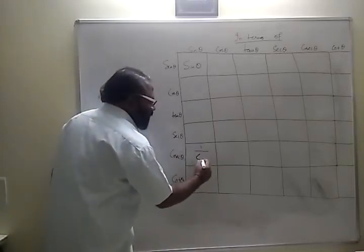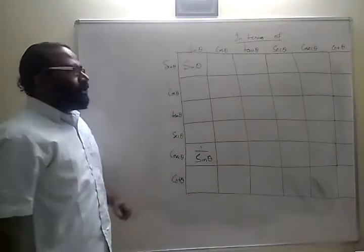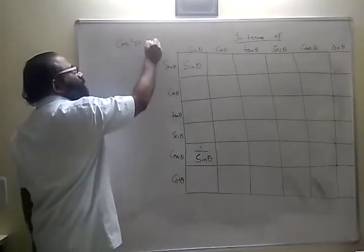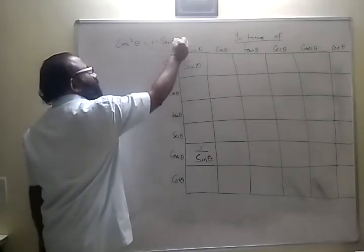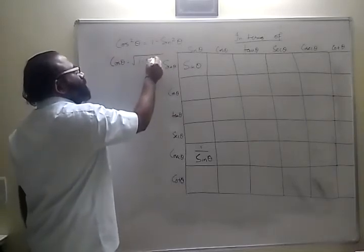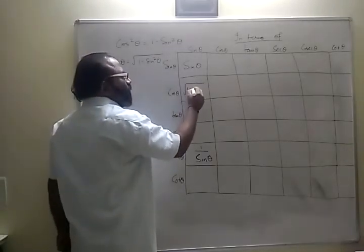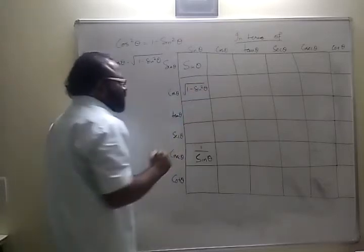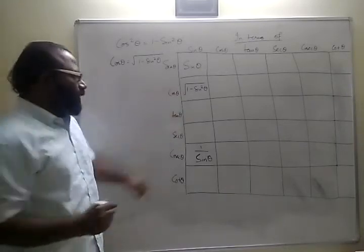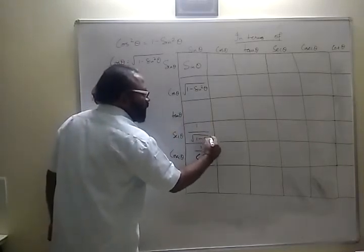Now, cos theta in terms of sine theta — what is the relationship between these two? I can write cos squared theta equals 1 minus sine squared theta, or cos theta equals square root of 1 minus sine squared theta. And secant theta is 1 by cos theta, so I can write it as 1 by root of 1 minus sine squared theta.